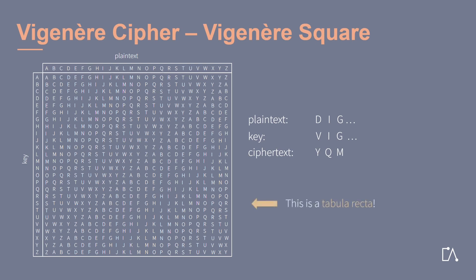Note that the Vigenère cipher is a tabula recta, which simply describes a square table of alphabets where each row is shifted one space to the left.